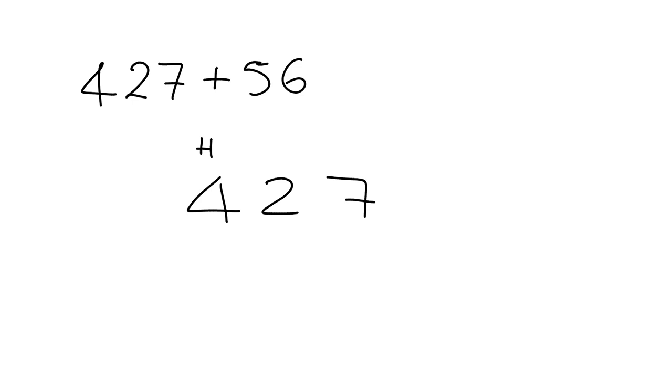...this 4 is 400, this 2 is the tens, and the 7 are the units. Now we're going to add 56 to it. We must just make sure that we line up the place values of 56 in the same way.